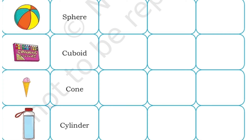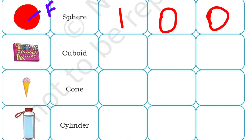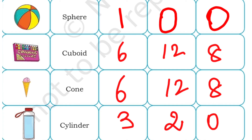For cuboid, cone and cylinder we already know the values for faces, edges and corners — so we can put the same values.